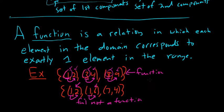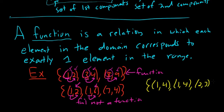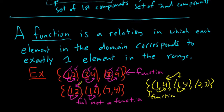Now, you could easily come up with an example like {(1,4), (1,4), (2,3)}. This is still a function, because 1 goes to 4 both times — we're just saying the same thing twice. Typically people don't do that because it's silly. Generally, if the same x goes to two different y values, it's not a function.